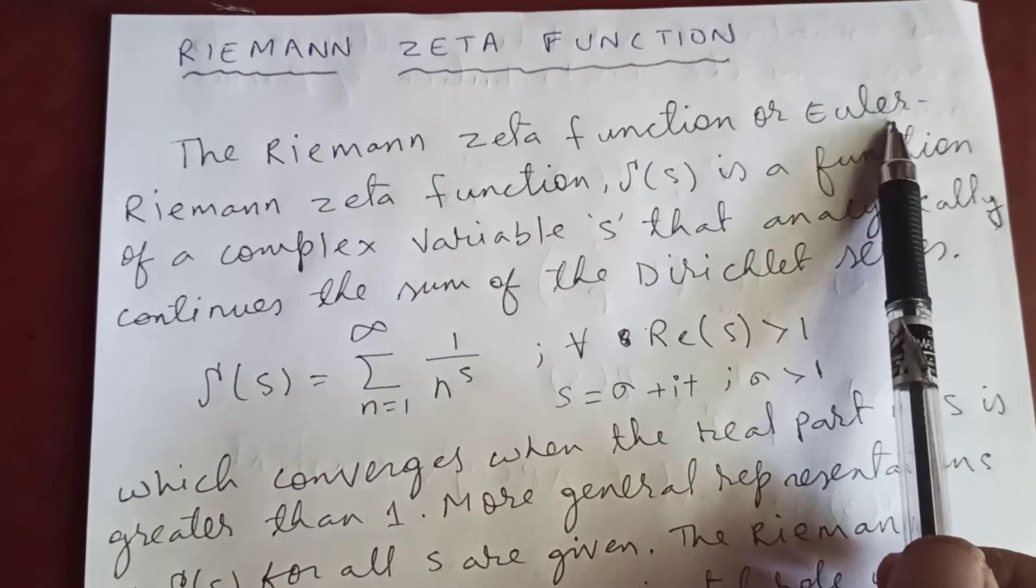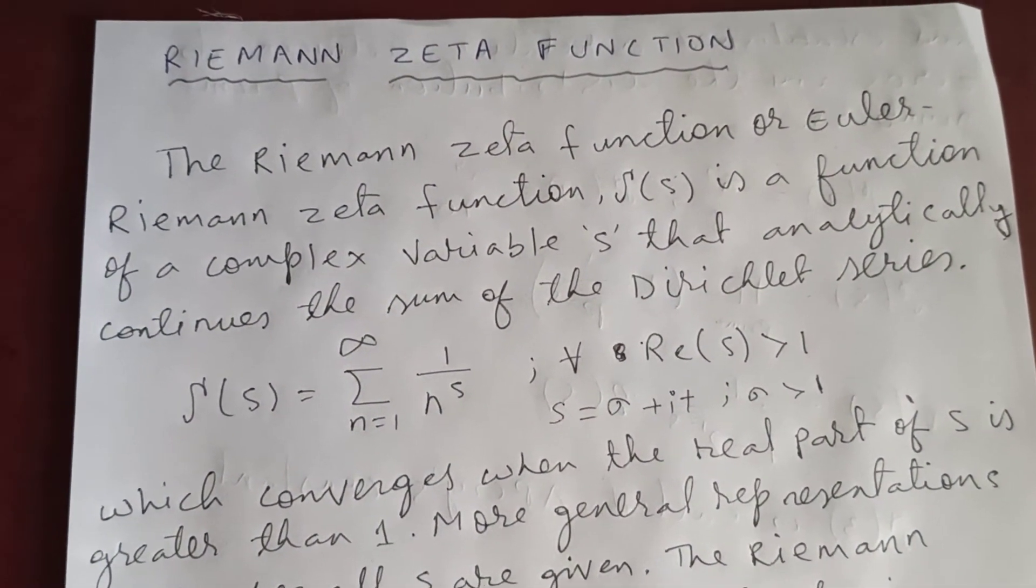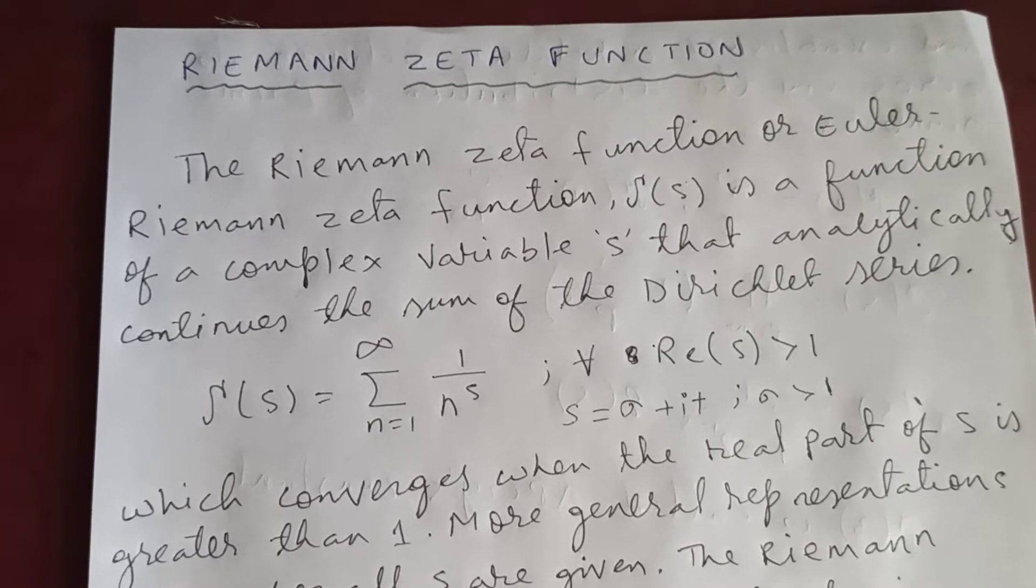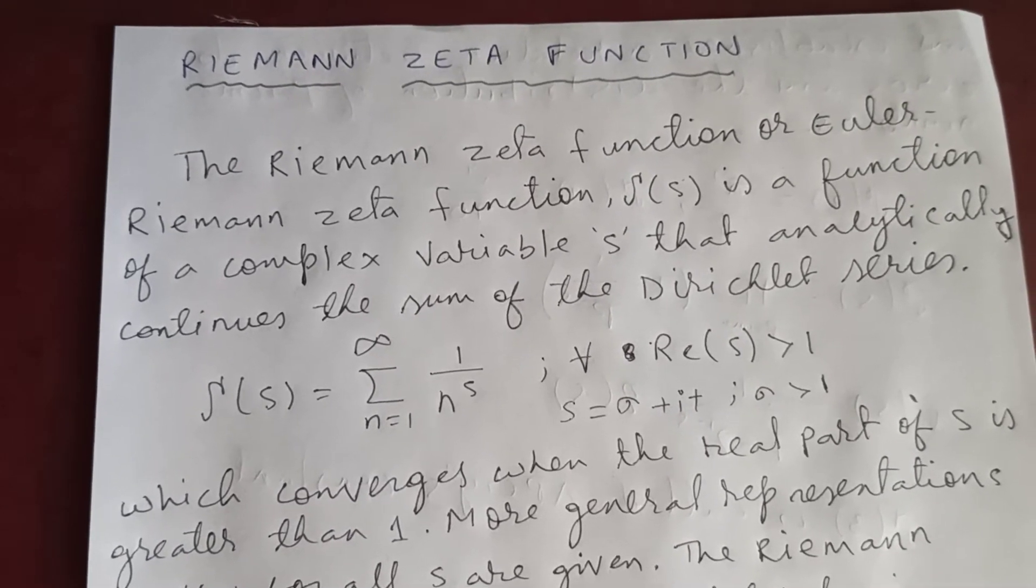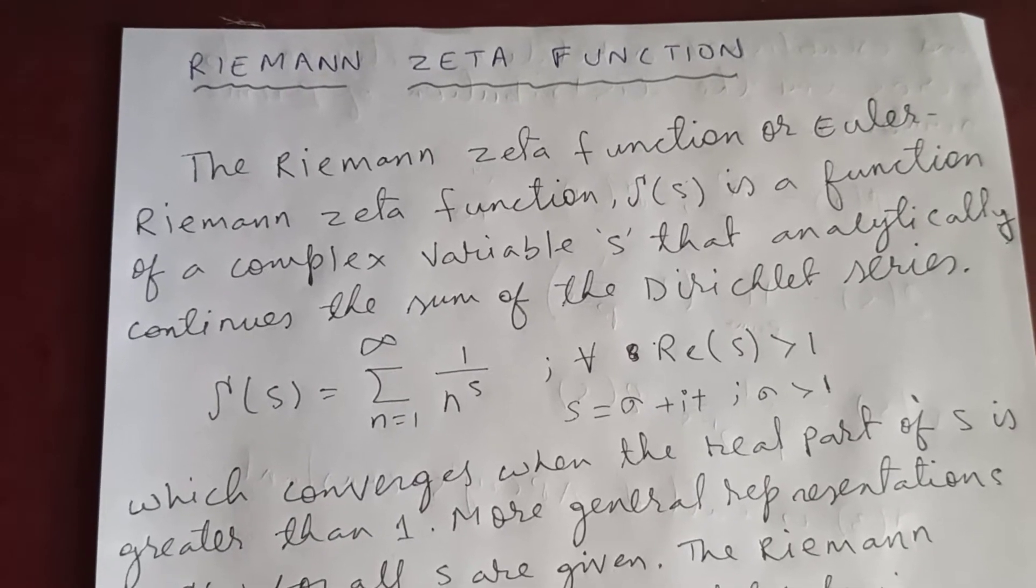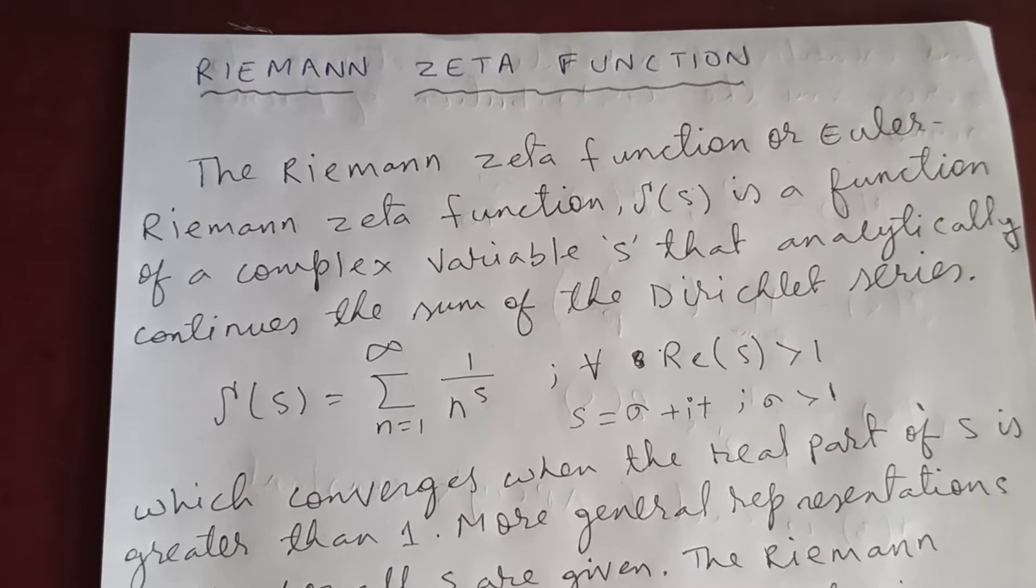Euler was the first to study this zeta function. Zeta of s is a function of complex variable. We will study in the future about complex analysis, and s analytically continues the sum of the Riemann zeta function.